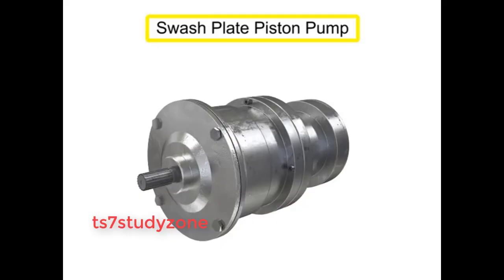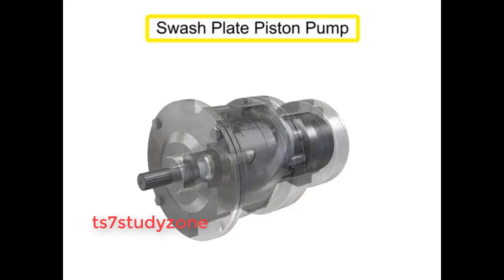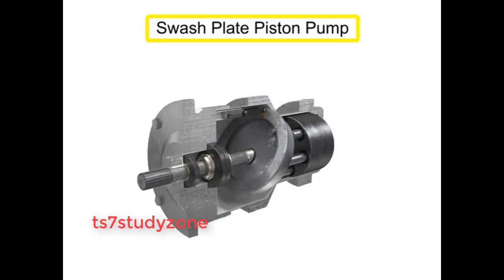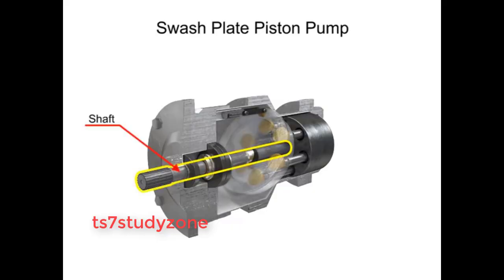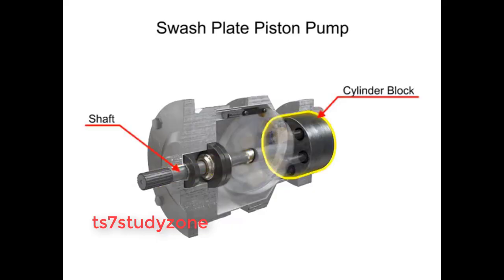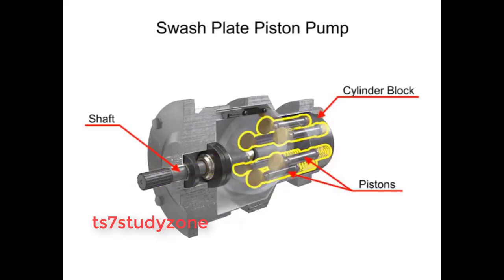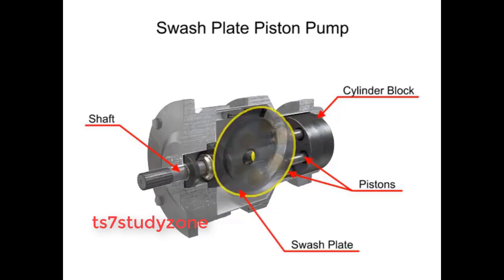A swashplate is a device used to translate the motion of a rotating shaft into the reciprocating motion of a piston. Swashplate piston pumps have a rotating shaft connected to a cylinder block containing pistons, which are pressed against a stationary swashplate that sits at an angle to the cylinder.